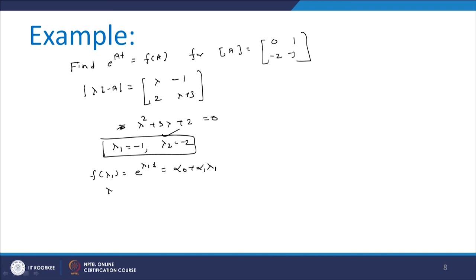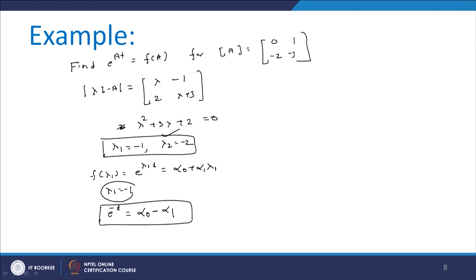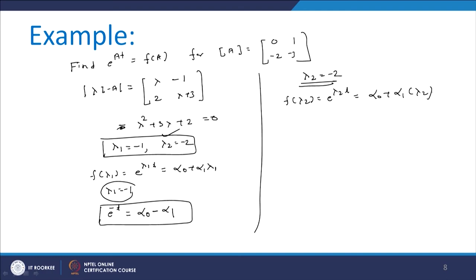Replacing λ₁ = −1: e^(−t) = α₀ − α₁. This is equation 1. For λ₂ = −2: f(λ₂) = e^(λ₂t) = α₀ + α₁λ₂, so replacing λ₂ = −2: e^(−2t) = α₀ − 2α₁. This is equation 2. We now have two equations and two unknowns α₀ and α₁, so we can solve them.